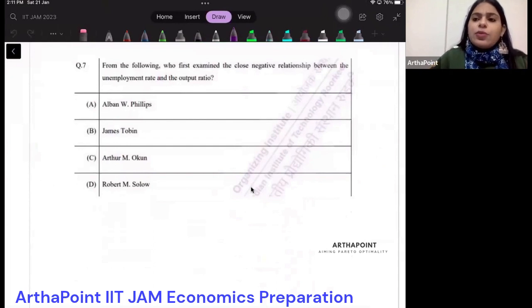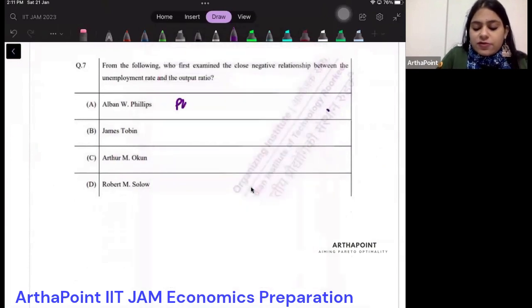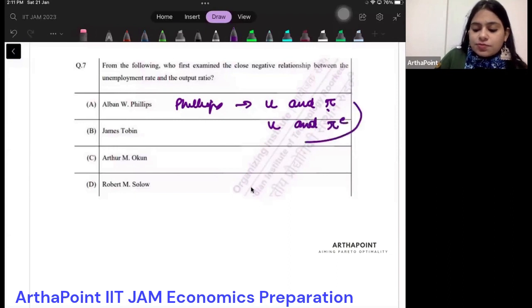When we talk about Phillips, he is associated with the Phillips curve, which gives us the relationship between unemployment and inflation. If I talk about the augmented Phillips curve, it is unemployment and expected inflation.